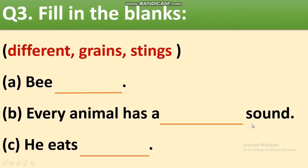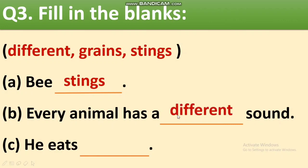Next question: fill in the blanks. Here we are given the options also. We have to choose the option and fill in the blanks. First fill-up: bee — bee stings. Next: every animal has a different sound. We have just done that question and read in the chapter that every animal has a different sound. Next fill-up: he eats — he eats grains. So these are the fill in the blanks.